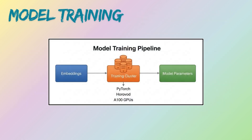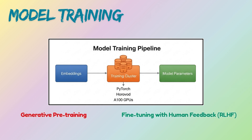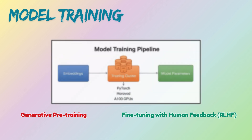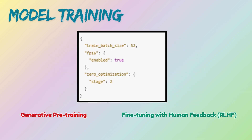Now it's time to train the model. This happens in two phases: generative pre-training and fine-tuning with human feedback. The configuration shown here enables mixed precision and model sharding for training huge models efficiently.